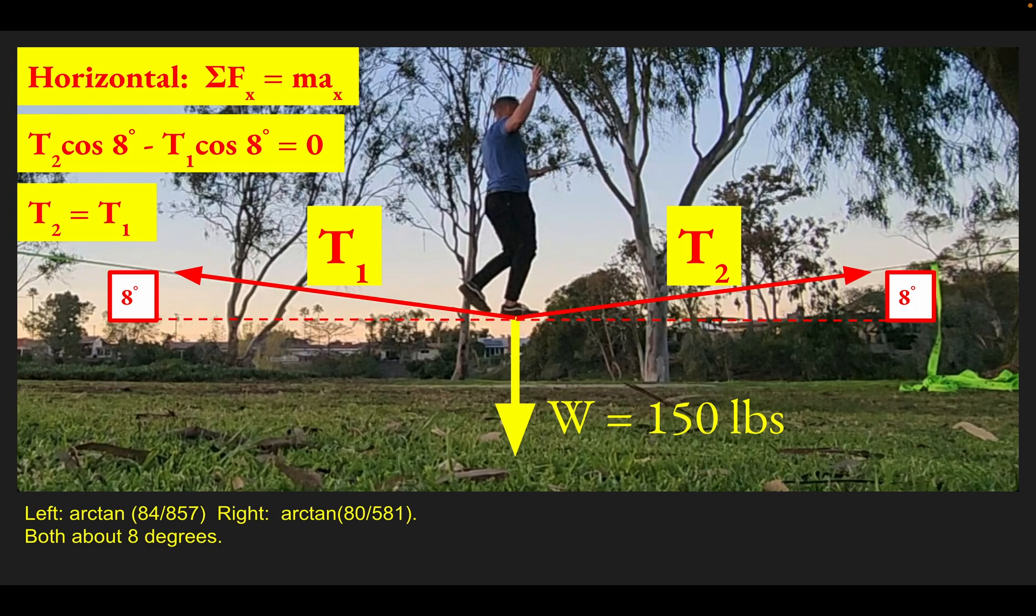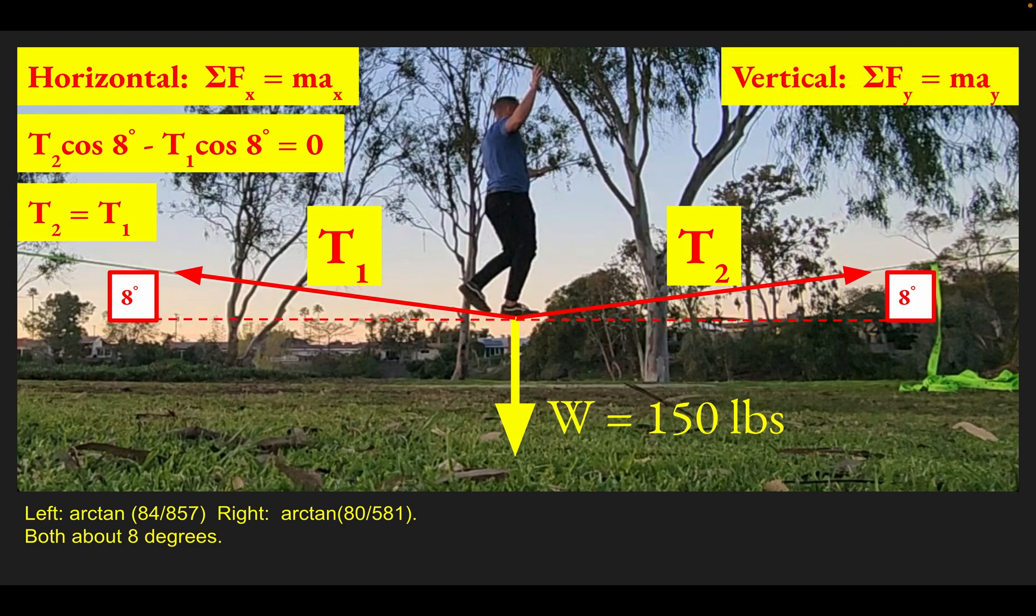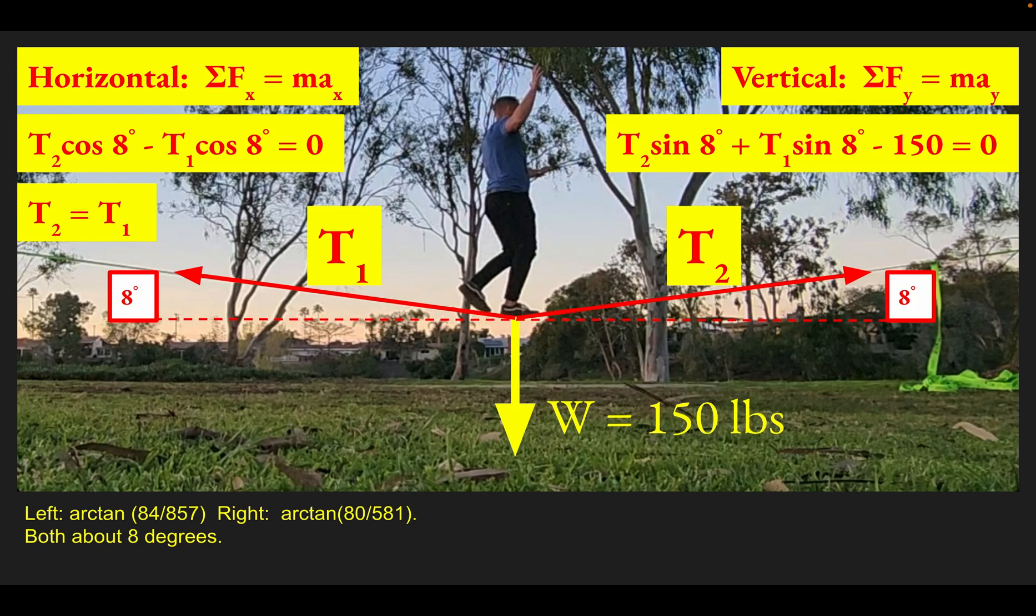Now let's look at the vertical forces. There are three: the two vertical parts of the tensions upward, and the vertical aspect of my weight—it's 100% vertical, directly downward. So T2 sin 8 degrees and T1 sin 8 degrees are the vertical parts of the tensions, and the weight is downward. Those all add to be zero.